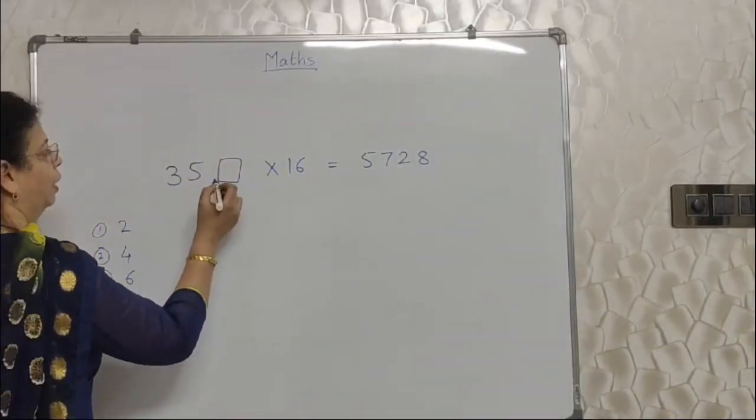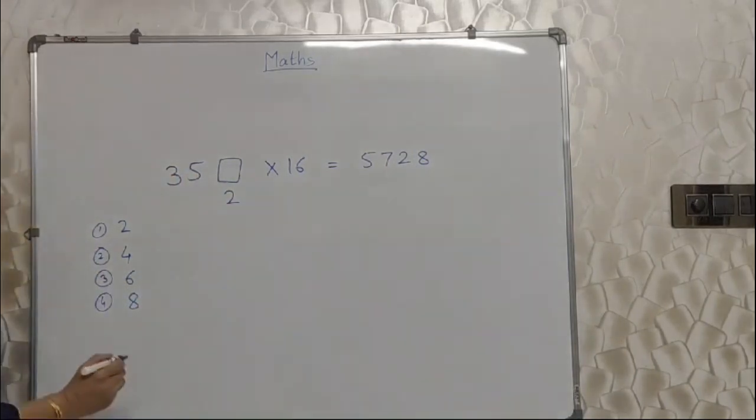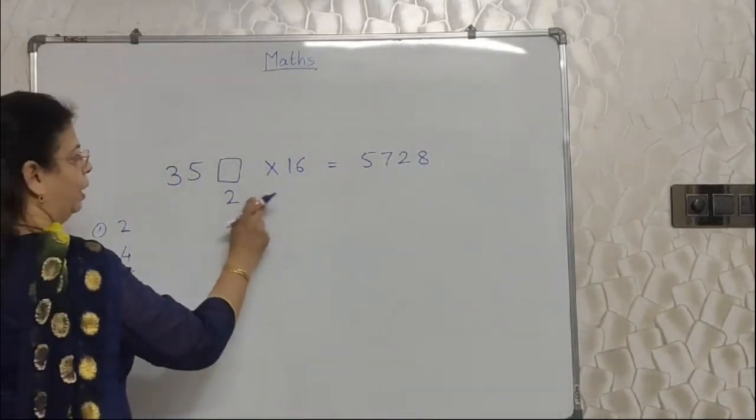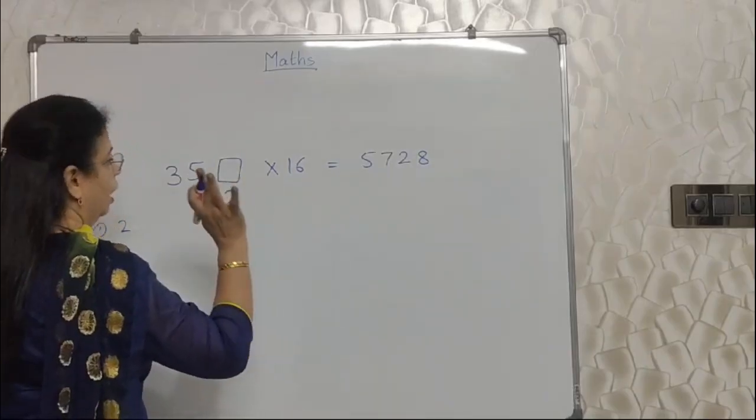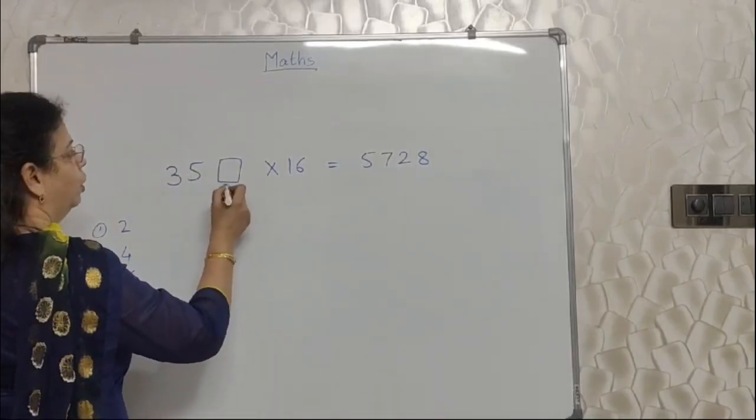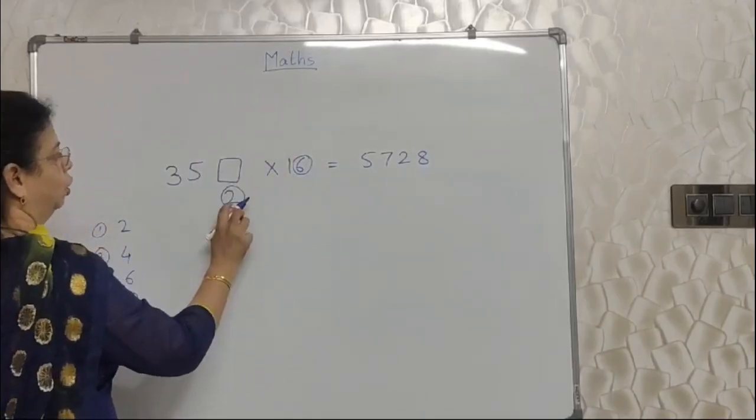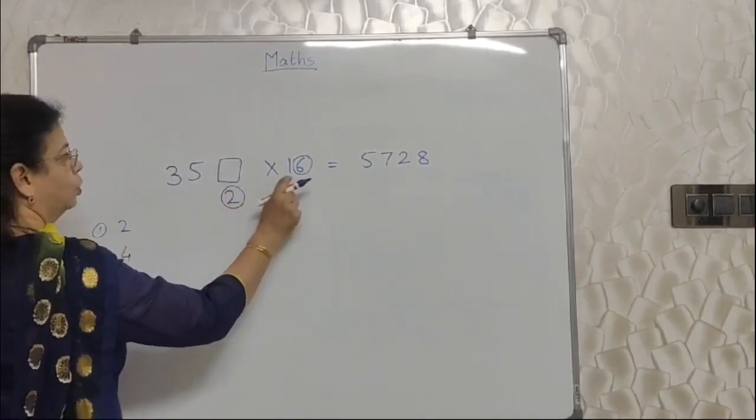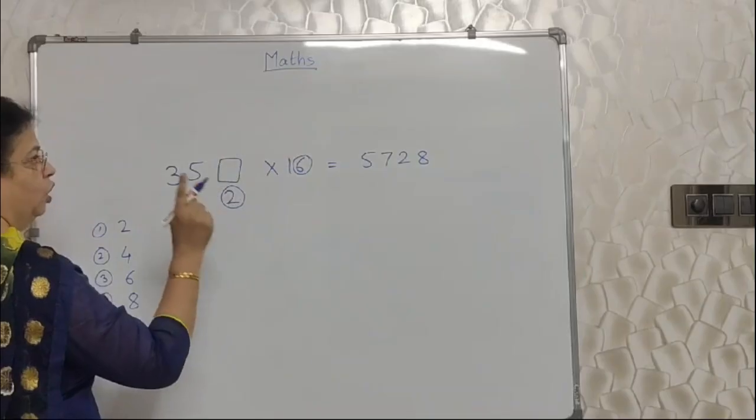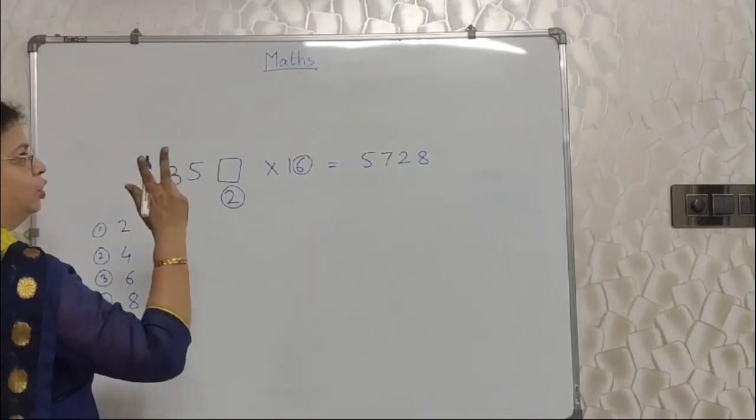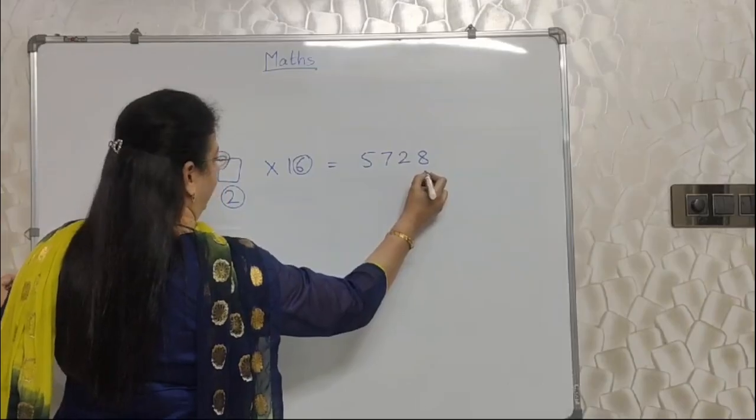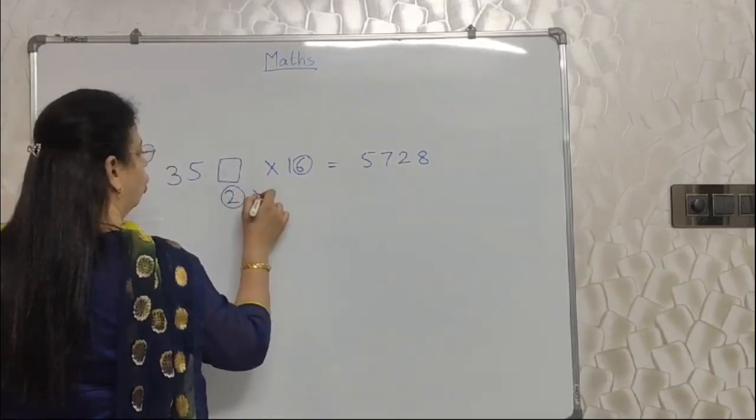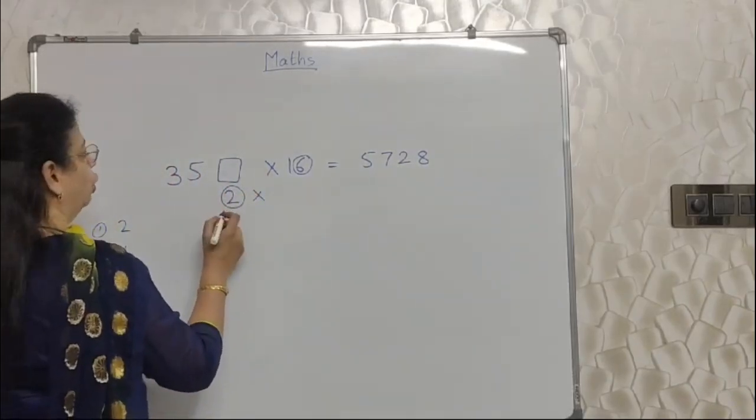See, first you fill up this with 2. I have done that. Am I going to do multiplication? 352 into 16, no. I am going to take help of only the units place of both the numbers. 2 and 6. 2, 6 are 12. Again, 12, the unit place is 2. So here, is there 2? No. This is 8. So option 2 is not there.